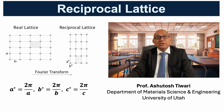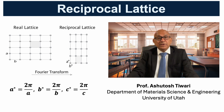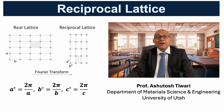Reciprocal space is defined as the Fourier transform of the real lattice. It does not represent physical atoms, but rather a conceptual grid where each point corresponds to a family of atomic planes in real space. Importantly, the lattice parameters invert when moving from real space to reciprocal space.